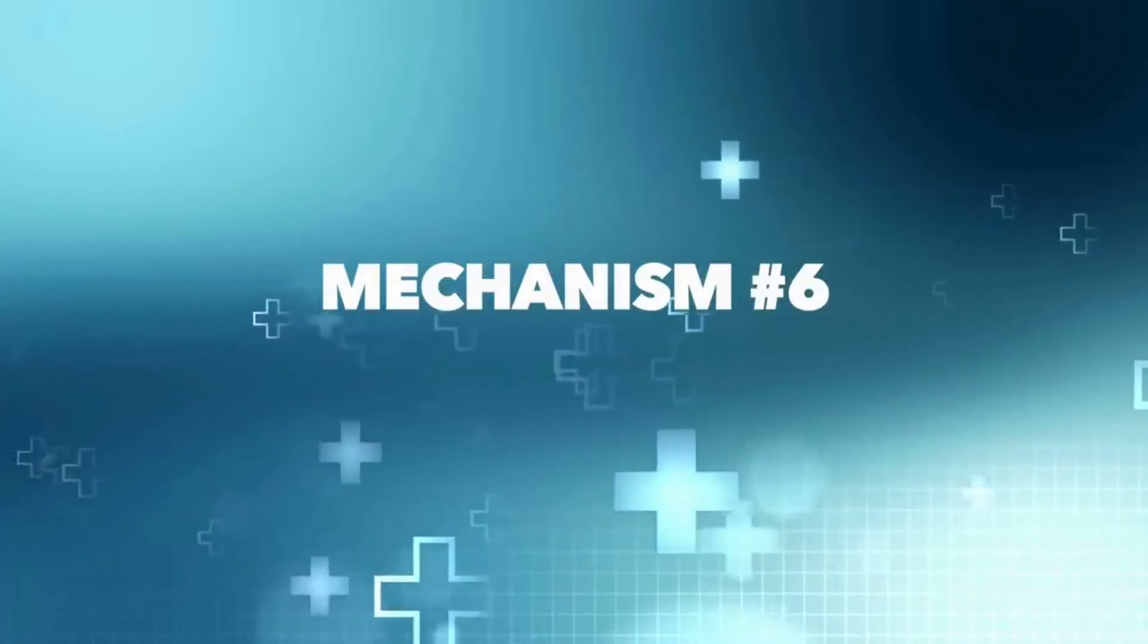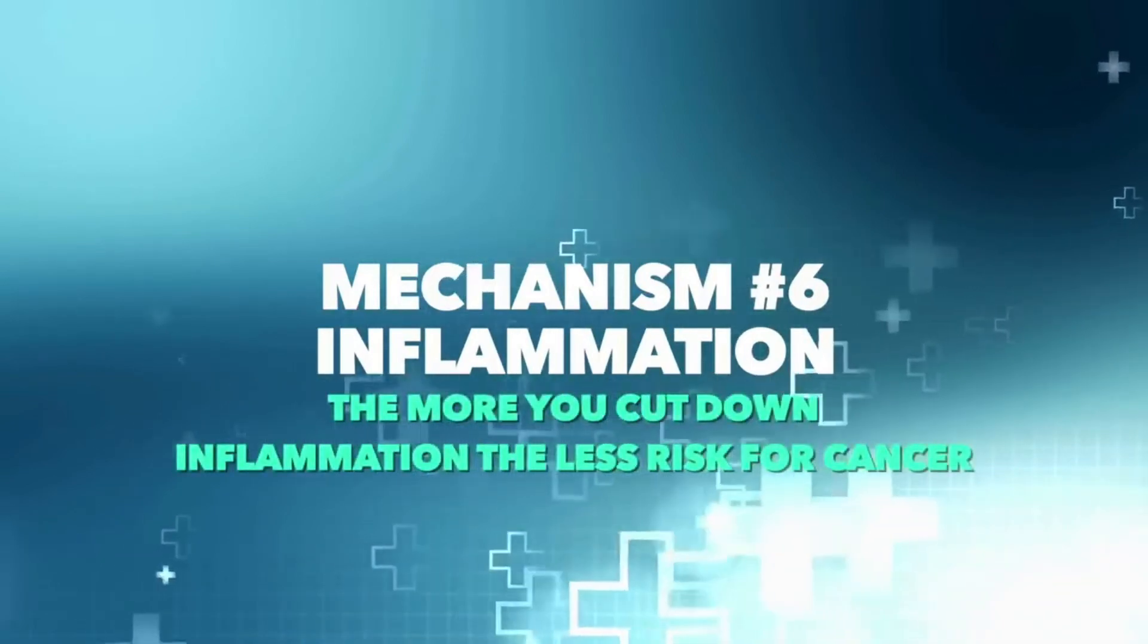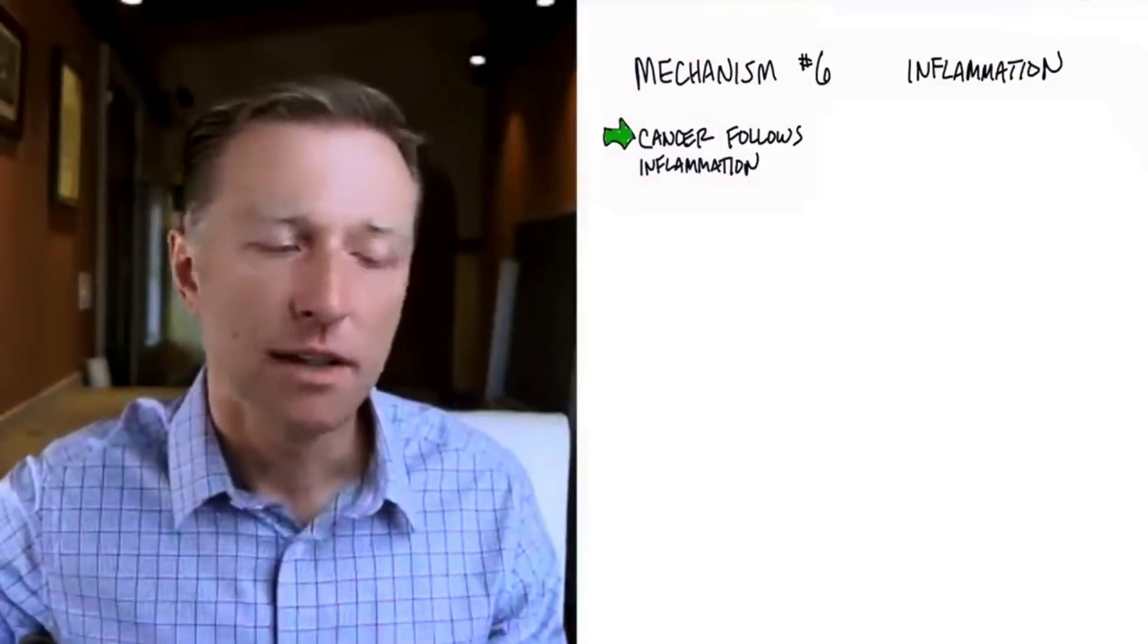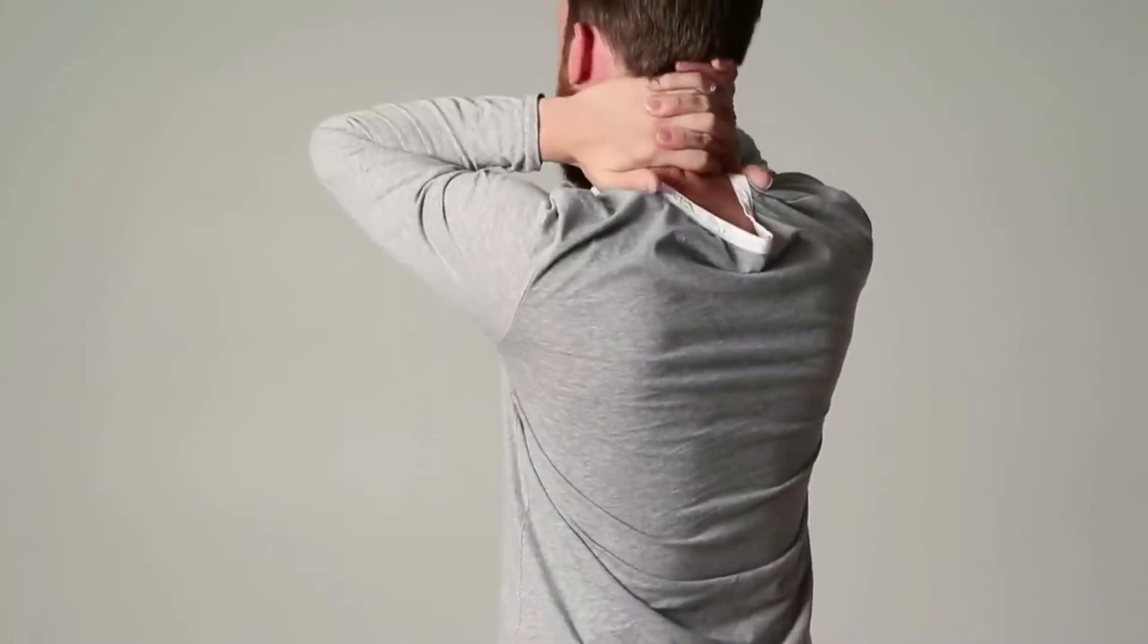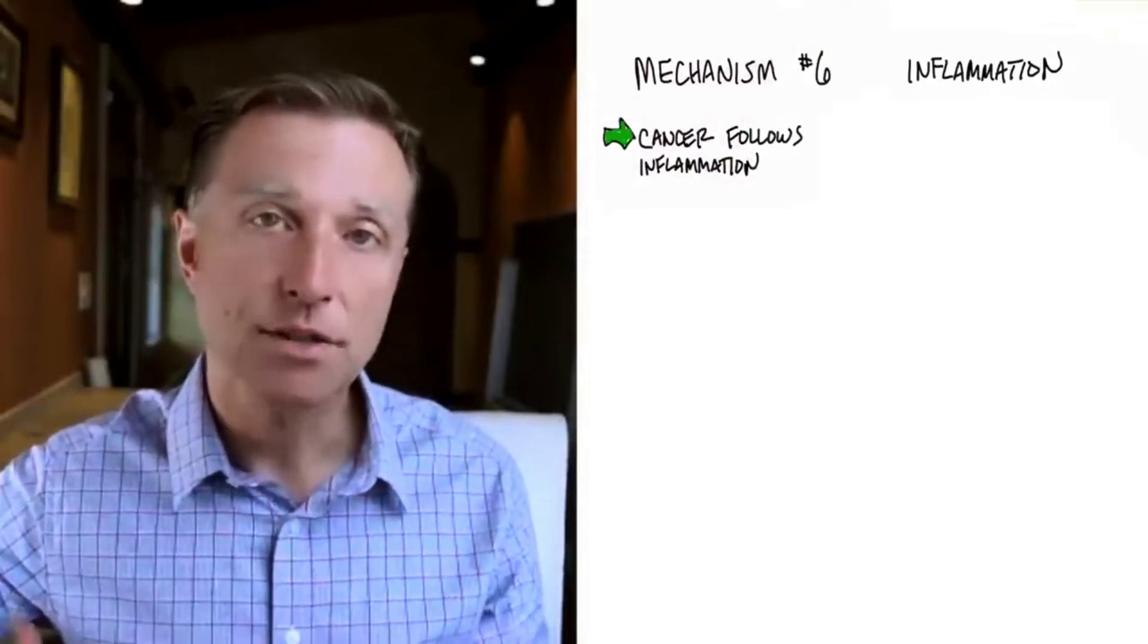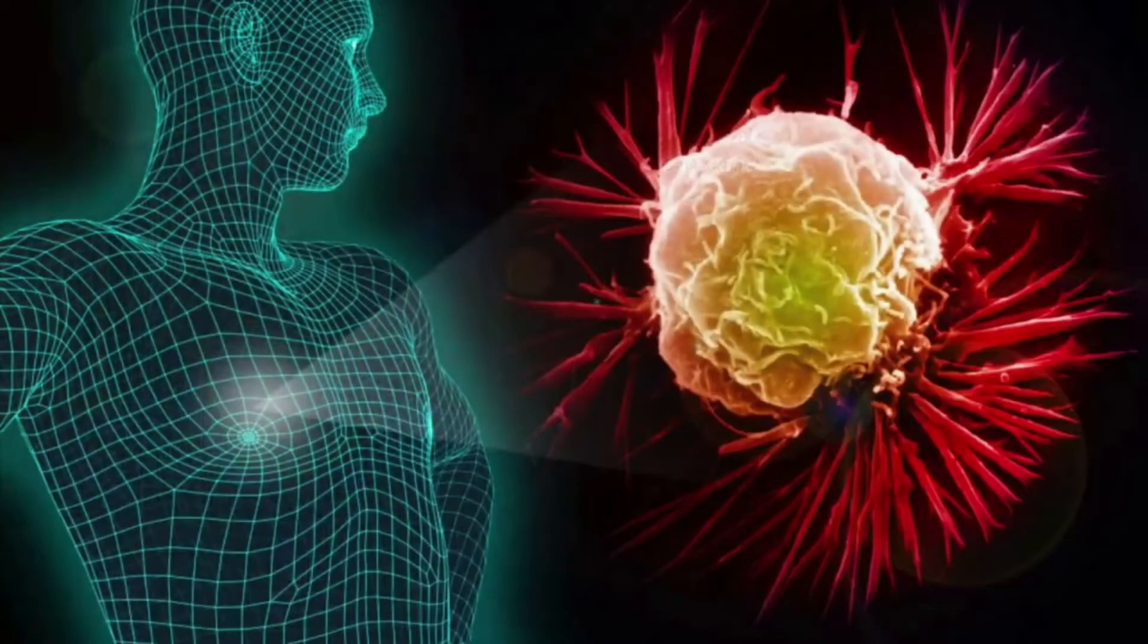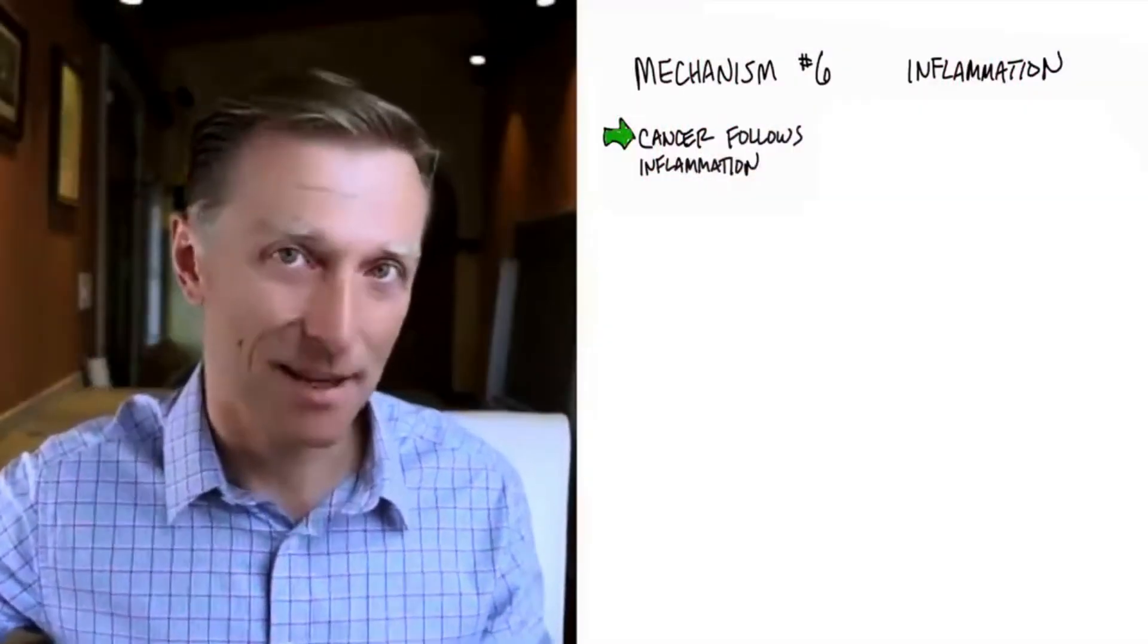Mechanism number six. And I've already talked about this a little bit. Inflammation. The more you can cut down inflammation, the less risk you have for cancer. Cancer follows inflammation. A lot of people develop cancer in areas of old injury, areas of inflammation. I remember when I was in practice, one lady had cancer in a certain part of her breast. And I asked her, have you ever injured that part of your breast? And when she thought about it, she remembered having some trauma in that exact location. Another patient came in with cancer of the brainstem. I asked him if he ever injured the brainstem.